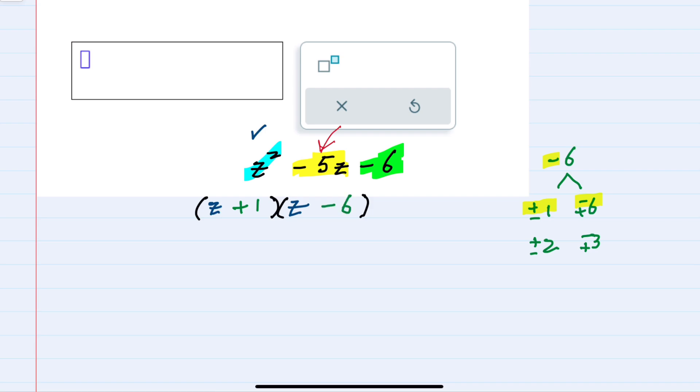And the order here doesn't matter. But from here I can check this to make sure that I haven't made any errors. z times z is z squared, plus 1 times minus 6 is minus 6.